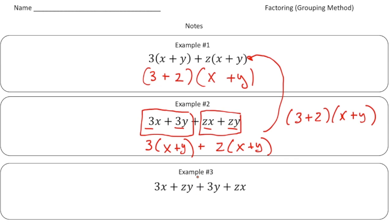Now example number three is actually equivalent to these other two, but this one's a little more complicated. If you notice, now we have three x plus zy, and there's nothing here that I can factor out — there are no common terms. Here we have three y plus zx. Now because all we're doing is adding the terms together, we can rearrange them. I notice this term has a three and this term has a three, so I'm going to rewrite this as three x plus three y. And here we have zy and zx, which also have a common factor of z, so I'll write plus zy plus zx.